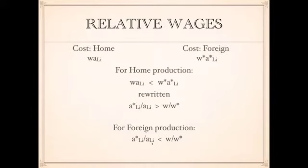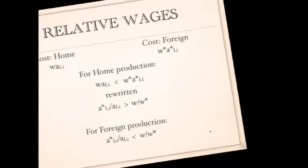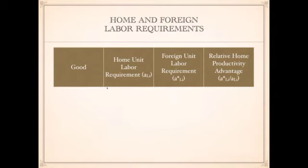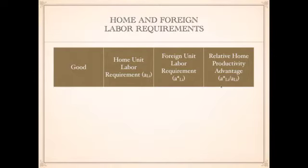I know some of you are wondering what this actually means, so I'm going to give you a numeric example taken directly from the textbook. We're going to look at home and foreign labor requirements, with columns for each particular good, the unit labor requirement for the home country, the unit labor requirement for the foreign country, and then we'll calculate the relative home productivity advantage — measuring how much more productive home labor is relative to foreign labor for each good.